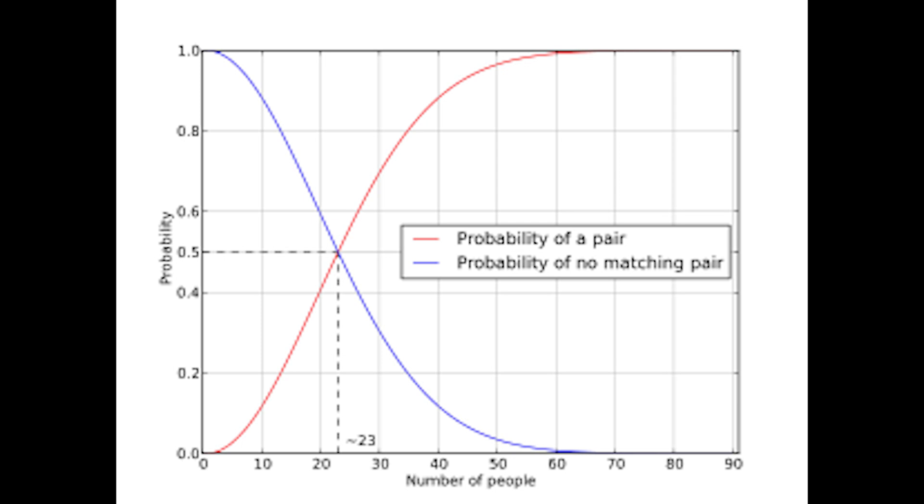If you add 22 over 365, 21 over 365, 20 over 365, and so on, you pass with 50% probability.